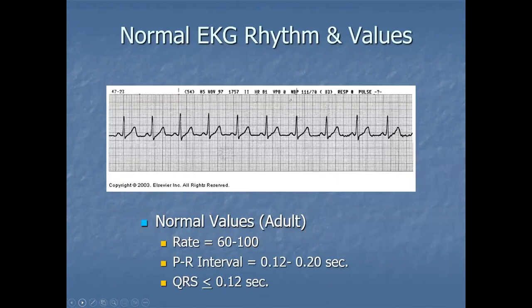A normal ECG has a rate of about 60 to 100. The normal PR interval is 0.12 to 0.20 seconds — the longest it should be is one large box. First degree heart block is simply where that PR interval is longer than 0.20 seconds. The QRS should be less than or equal to 0.12 seconds.